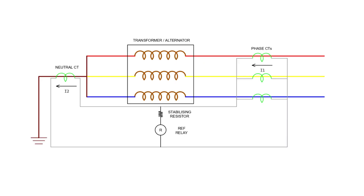While differential protection covers about 80% of the winding, REF handles the remaining protection. It protects the transformer winding from earth faults, specifically in the zone between the transformer star-side winding and its earth-neutral terminal. These protections are crucial for detecting imbalances and earth faults in transformers.